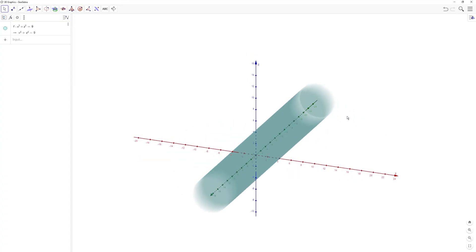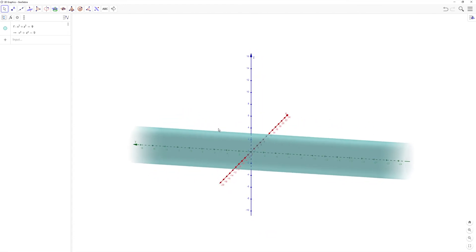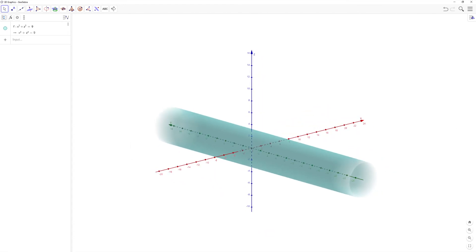As you can see, we have this cylinder object. And if you look at the x-z plane, you can see that it creates that circle with radius 3. And since y is unbounded, it goes along the y axis.